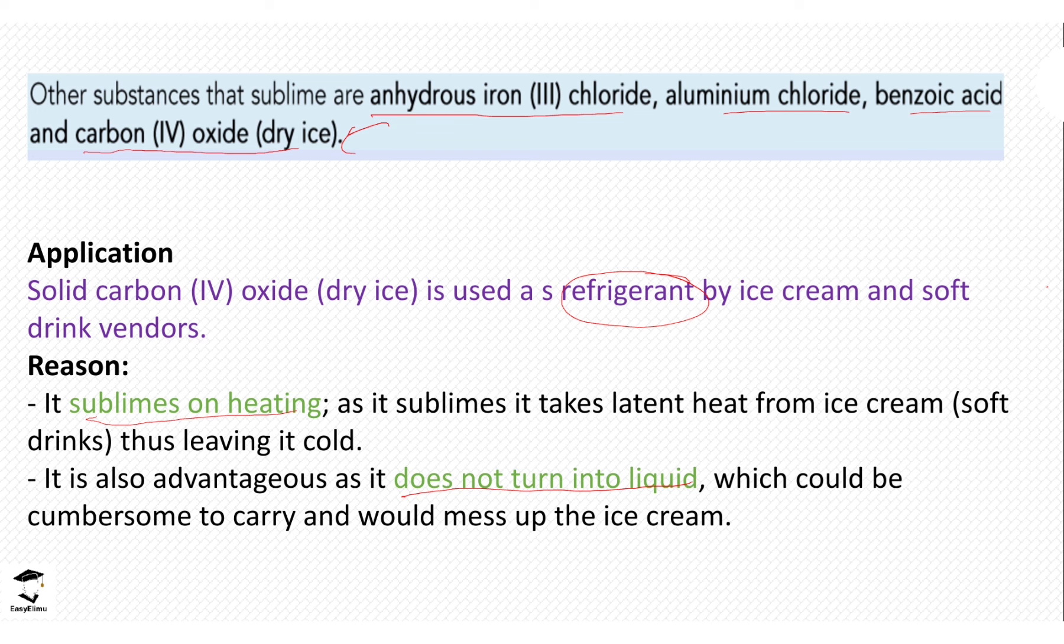Some of this dry ice is also used in some refrigerators which help with refrigeration. It also cools. So when you look at changing of water into ice and carbon-4 oxide into ice, you can see carbon-4 oxide can form ice as well. That is what we have discussed for today.